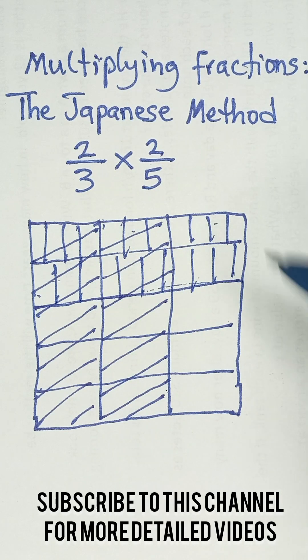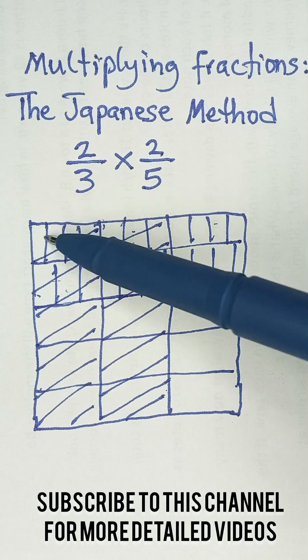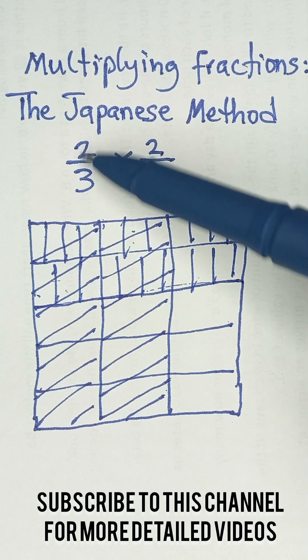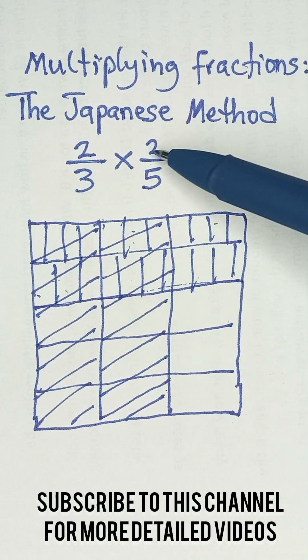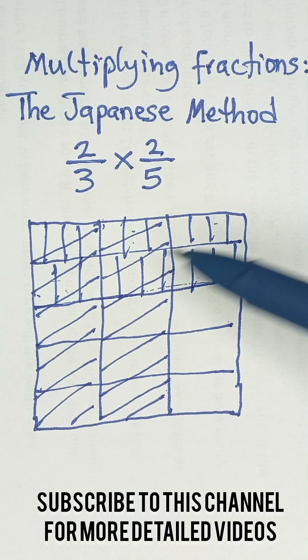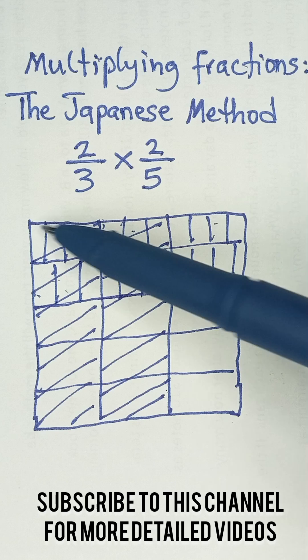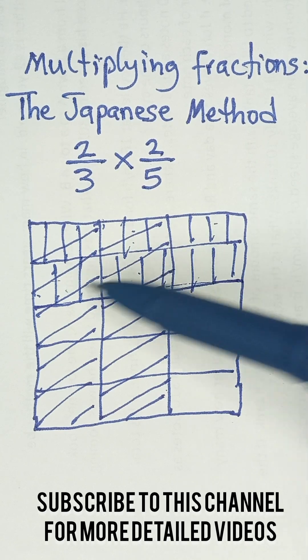Now to get our final answer, you pick the parts that intersect where the two we selected intersect with the two that were selected. You can see where these horizontal lines meet the vertical lines. These are the four boxes where they meet.